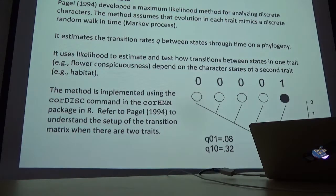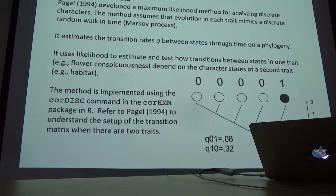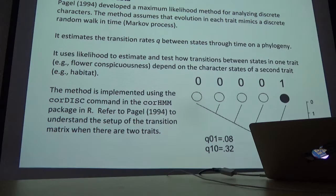Mark Pagel developed a method to analyze data for discrete characters — his 1994 paper in Philosophical Transactions of the Royal Society is apparently the most cited publication ever in that journal. That indicates how popular and useful these methods have become. For discrete characters, Pagel's method assumes that traits evolve according to a random walk — but for discrete traits it's a discrete random walk in time, called a Markov process, rather than the continuous Brownian motion. The method estimates the rate at which transitions occur through time from one state to the other, and uses likelihood to test how a transition in one trait is associated with transitions in the other trait.